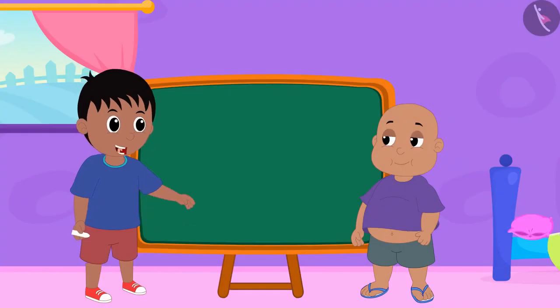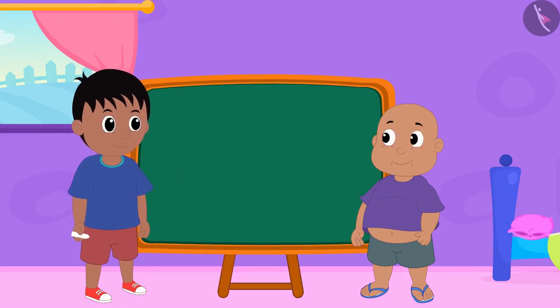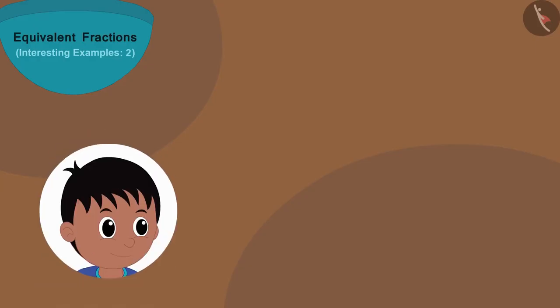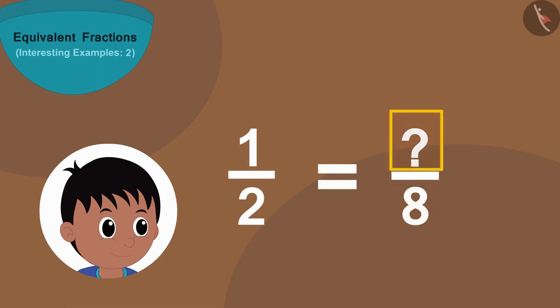Today, Raju and Bablu are playing a unique game. Raju will write a fraction, then he will write the number below the equivalent of that fraction, and Bablu will have to find the number above it.